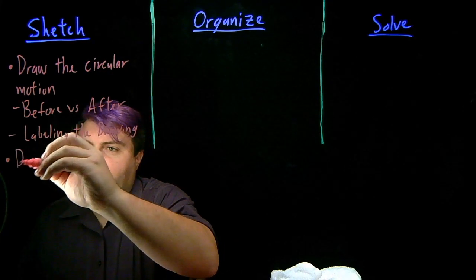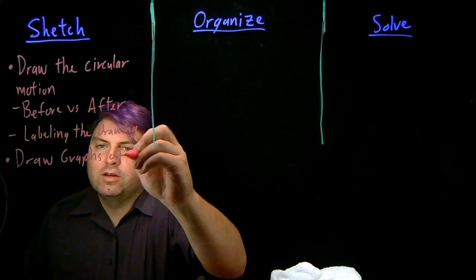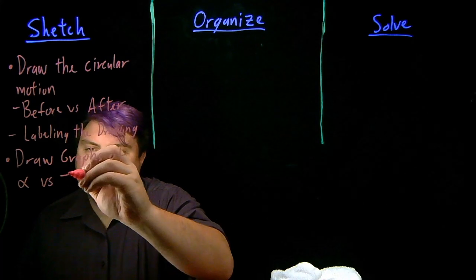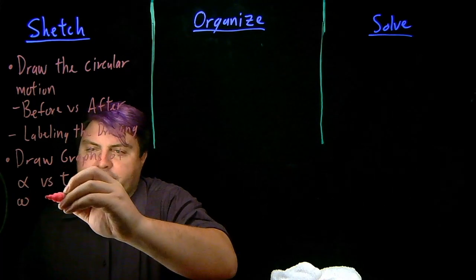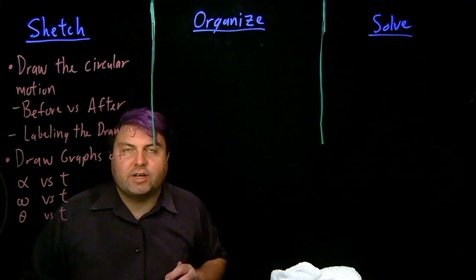When we're sketching, we also want to draw graphs of our angular acceleration alpha versus time, our angular velocity omega versus time, and our angular position theta versus time.